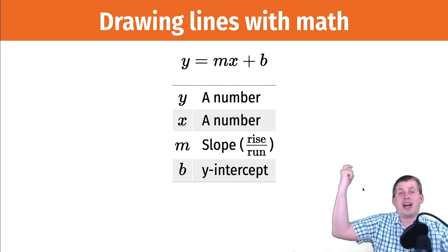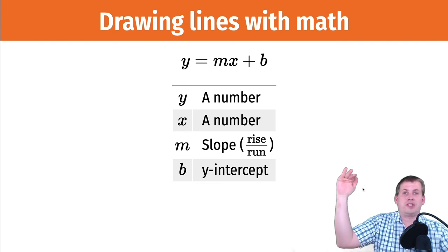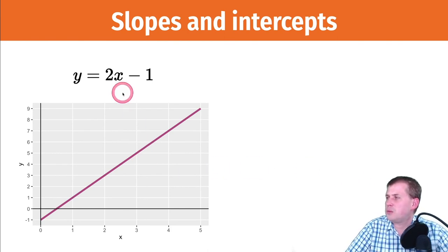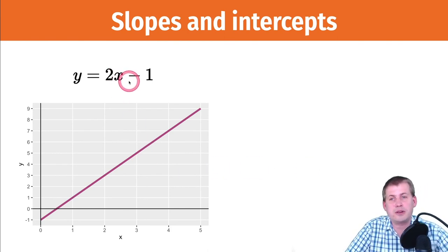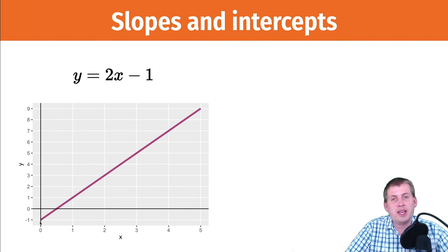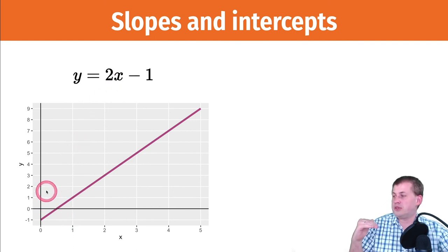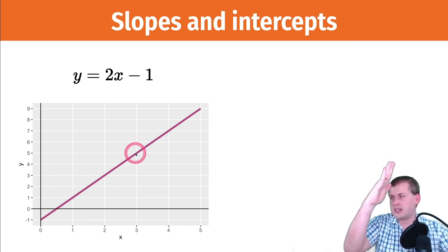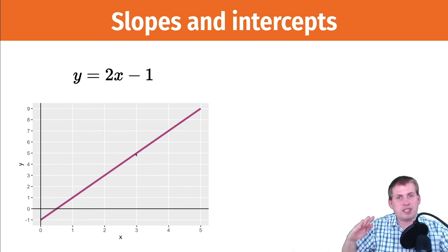If b is five, you start at five and then do whatever the slope says. For example, y = 2x − 1 starts at negative one on the y-axis — that's our b — and the slope of 2 means going up two over one, up two over one. It's a steep line starting at negative one and going up.